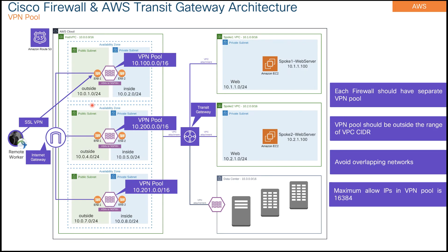It is really important to understand that we should have a separate VPN pool per firewall, and these pools should be outside of the CIDR ranges used in your VPCs. The reason for a separate pool is to enable reverse traffic symmetry. If I'm connected to firewall 1, I'll be given an IP from that pool — say 10.100.0.0/16 — and routing is configured so traffic comes back to the same firewall. Source NAT is not scalable, so we recommend separate VPN pools per firewall.